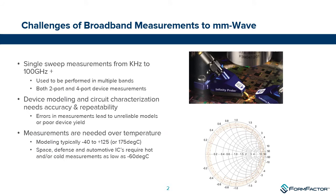There are many challenges in making very high frequency measurements over a really broad band, especially when going to millimetre waves. People used to do this in multiple bands — for example, measuring in coax from a few megahertz up to 50 gigahertz, then using rectangular waveguide bands from 50 to 70 and 75 to 110 gigahertz, and then stitching all that data together. The problem is that requires multiple probes, multiple calibrations, multiple measurements, plus trying to get the data into one continuous sweep — so it wasn't ideal.